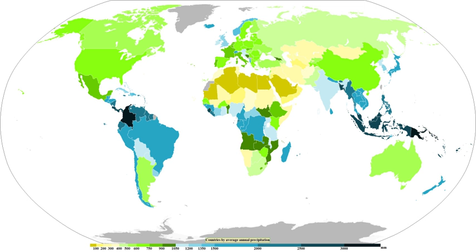Eventually, the cloud droplets will grow large enough to form raindrops and descend toward the earth where they will freeze on contact with exposed objects. Where relatively warm water bodies are present, for example due to water evaporation from lakes, lake effect snowfall becomes a concern downwind of the warm lakes within the cold cyclonic flow around the backside of extra-tropical cyclones. Lake effect snowfall can be locally heavy.